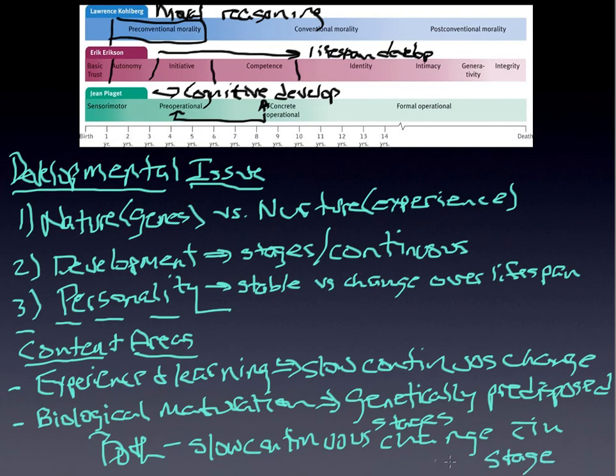And that's key to understand. So it's not an either-or. It really is a both. Both and, in other words, when we're looking at these things, it is both a slow, continuous change and within a stage. So it's slow, continuous and stage. And that's what I'm talking about here with both and.